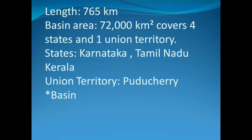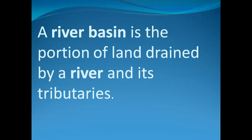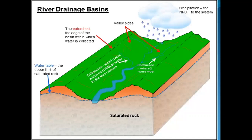Kaveri river covers 4 states and 1 Union Territory — Karnataka, Tamil Nadu, Kerala, and the Union Territory of Puducherry. A river basin is the portion of land drained by a river and its tributaries, as shown in the image of a river basin.